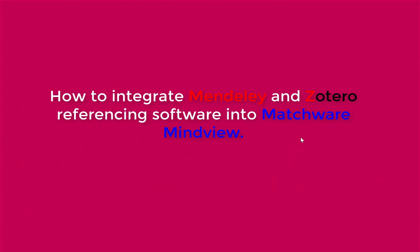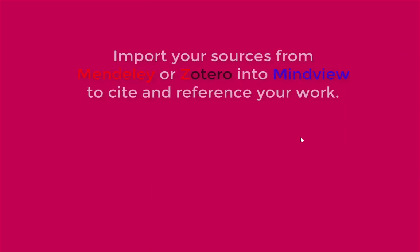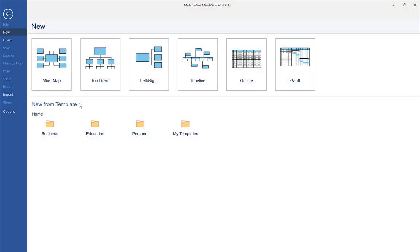Welcome back. Today I'm looking at a program called Matchware MindView for mind mapping, and I'm going to show you how to integrate it with Zotero, which is a referencing client. You can actually create a mind map, structure it, break it down, and then cite your work by importing all your sources from Zotero into MindView. I want to show you how to do that and a couple of methods of doing that. So the first thing I need to do is actually create a mind map.